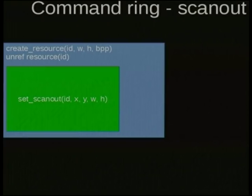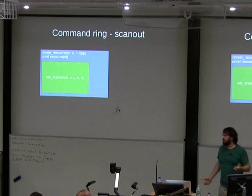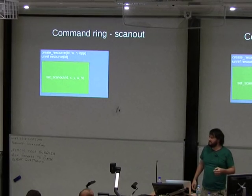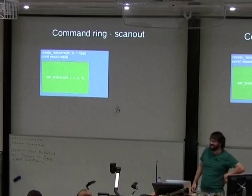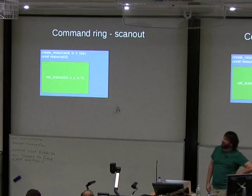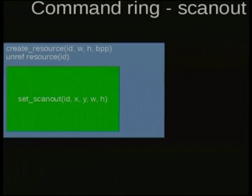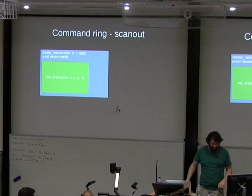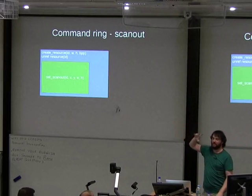The next command is set_scanout — this means I want to display something in a resource. It tells which rectangle of your resource to put on screen: an X and Y offset into the resource, plus a width and height. In a normal case it'll be the full size of the resource, or if you've got multiple heads on a single resource it'll be a left and right box — your standard X window layout. You call set_scanout once per output you currently have. I've hard-coded four outputs, but there's no reason that needs to be a limit.